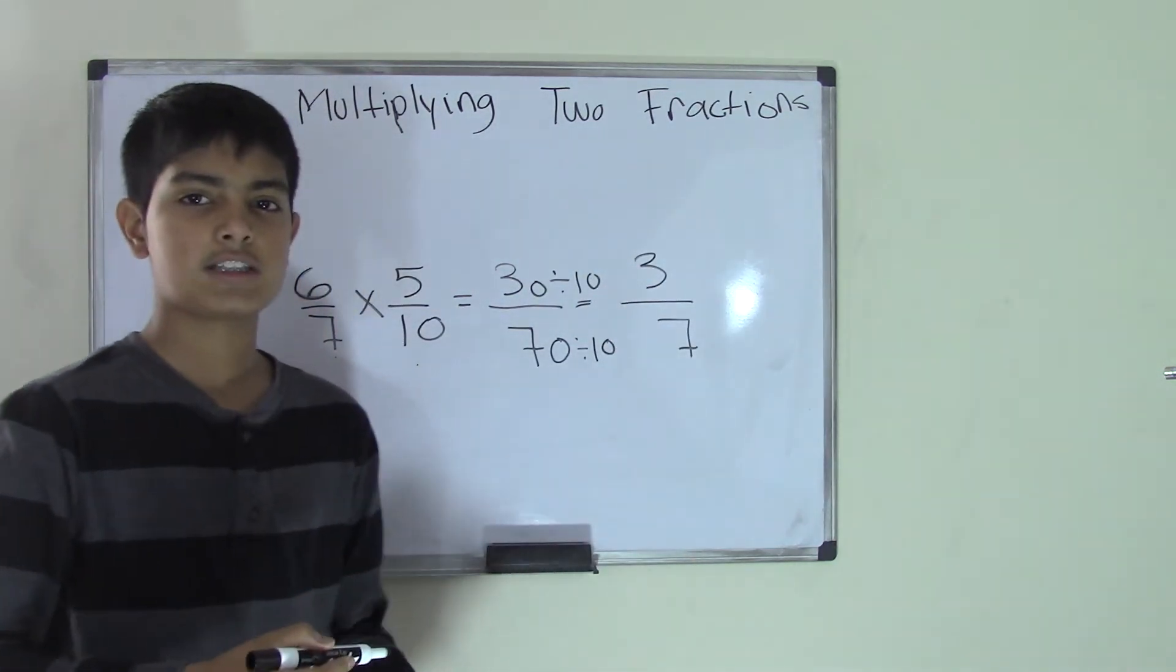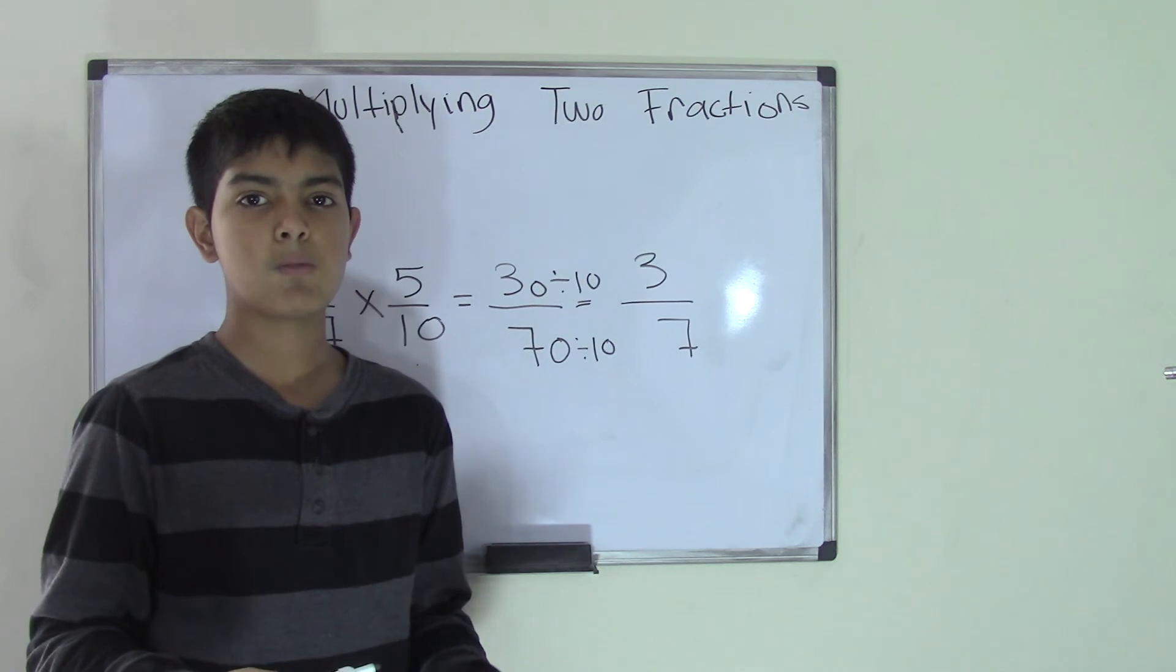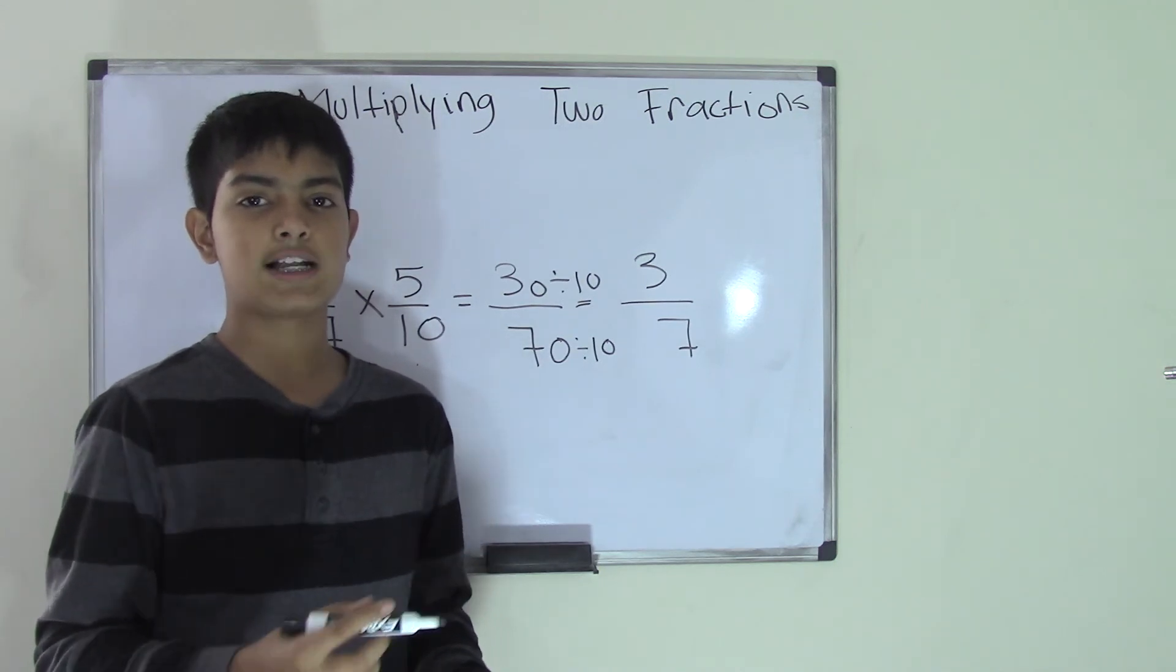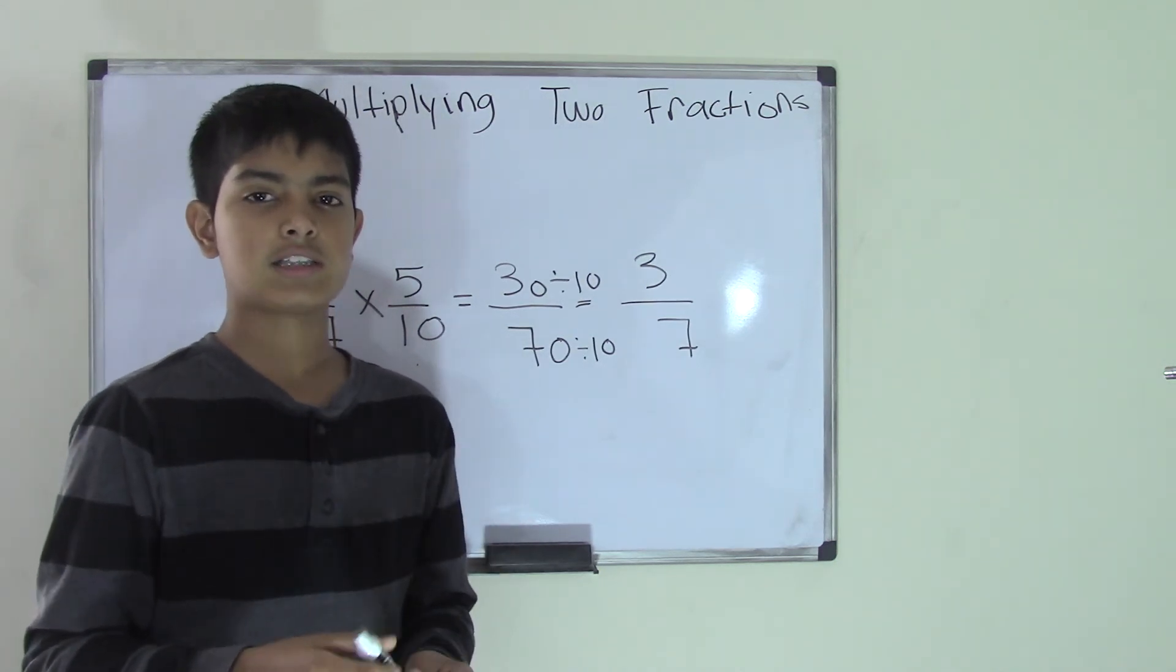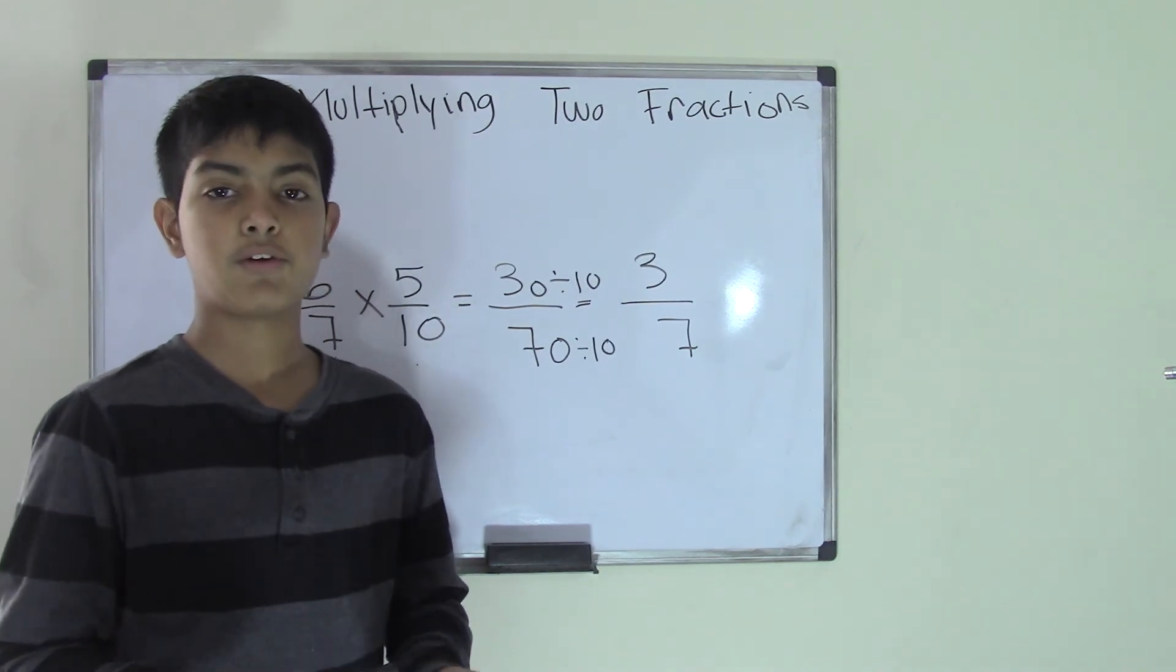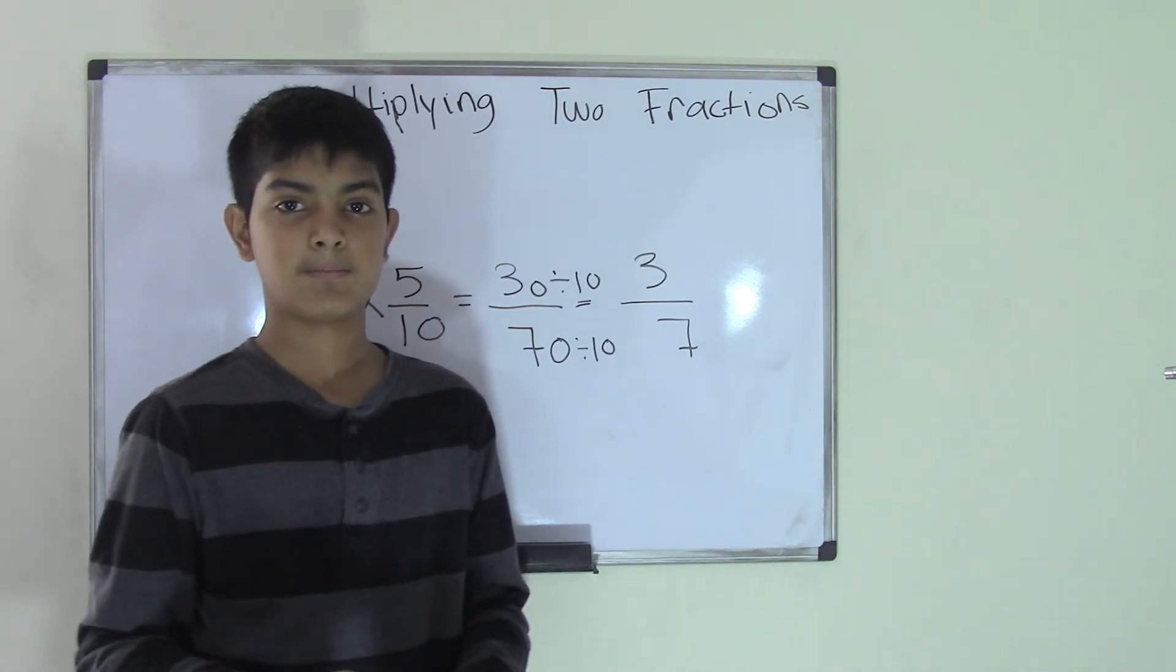So 3 over 7 is the product for our multiplying two fractions problem, and this is it for this topic. Stick around for more videos, and we'll see you guys next time. Bye!